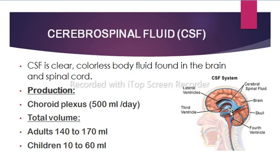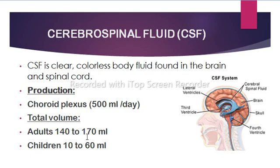CSF is produced by specialized ependymal cells in the choroid plexus of the ventricles. The ventricles are a series of cavities filled with CSF in the brain. Per day, 500 ml of CSF are produced in the choroid plexus. The total volume in an adult is 140 to 170 ml and in children 10 to 60 ml.